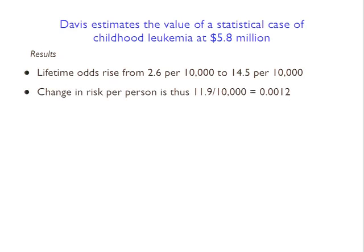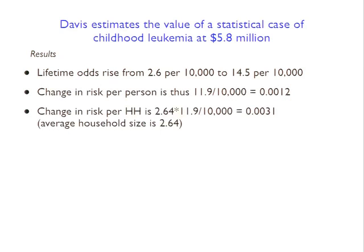That's not actually the exact number he wants to use because households don't contain just one person on average - they contain multiple people. The average household size is 2.64. And remember, the thing he's measuring is a house price, so the relevant number is how many people are living in the house rather than just a single person.